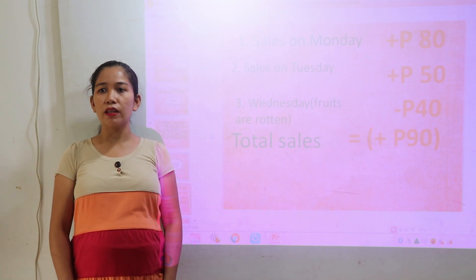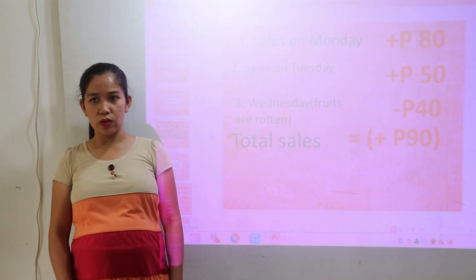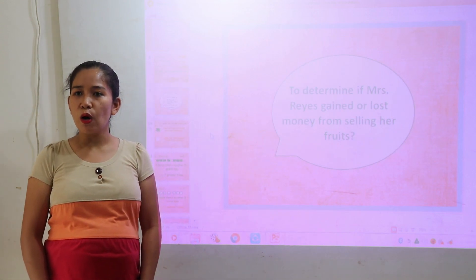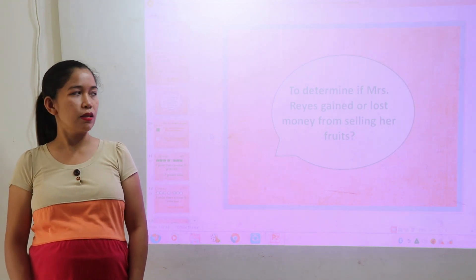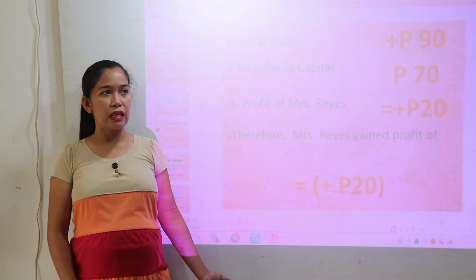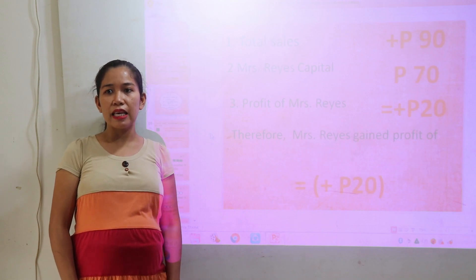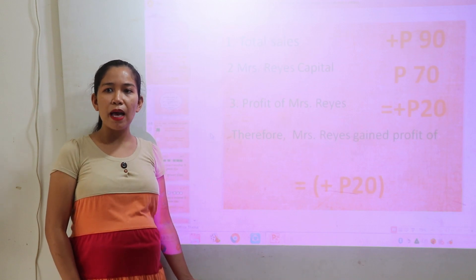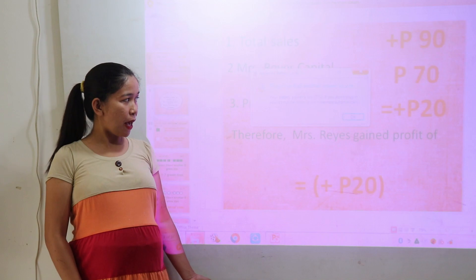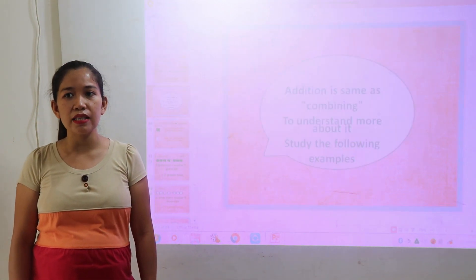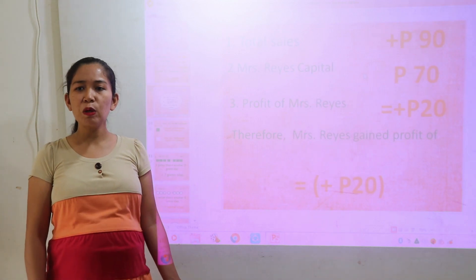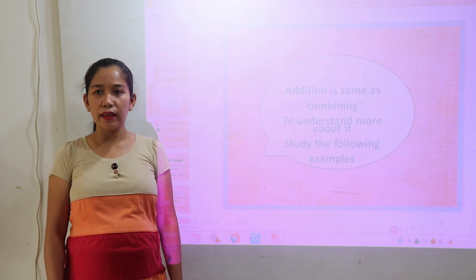So the total sales is equal to 90 pesos. And now, to determine if Mrs. Reyes gained or lost money from selling her fruits, what are we going to do? We deduct Mrs. Reyes' capital, which is 70 pesos, from the total sales of 90 pesos. So, 90 pesos less 70 pesos is equal to positive 20 pesos. Therefore, Mrs. Reyes gained a profit of 20 pesos, represented as positive 20 pesos.